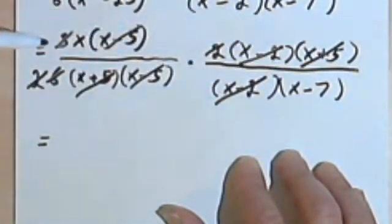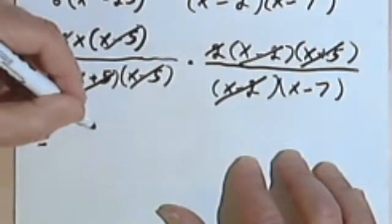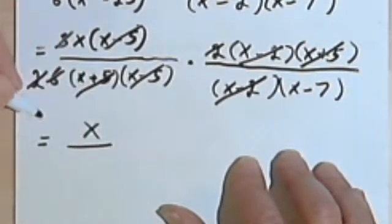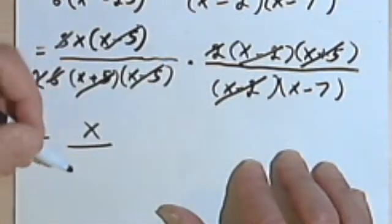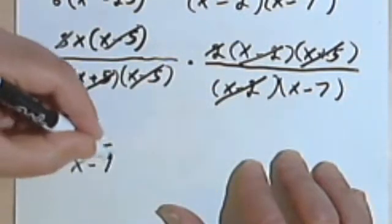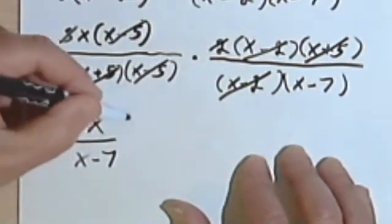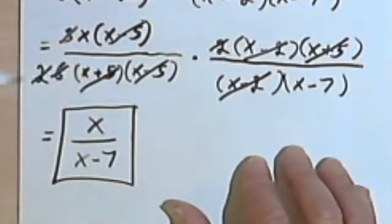So what am I left with? Well, nothing over here, and just an x over here. So this is just x. And in the denominator, well, this bottom has been totally crossed out, this denominator. And all I have over here is (x - 7). So this is my simplified answer.